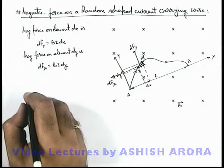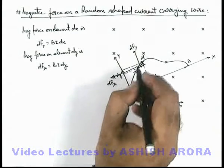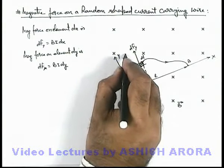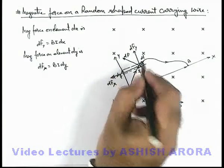If we calculate the total magnetic force, we can also get this dFx and dFy as vertical and horizontal components of this force dF, which is acting on the element of length dl.